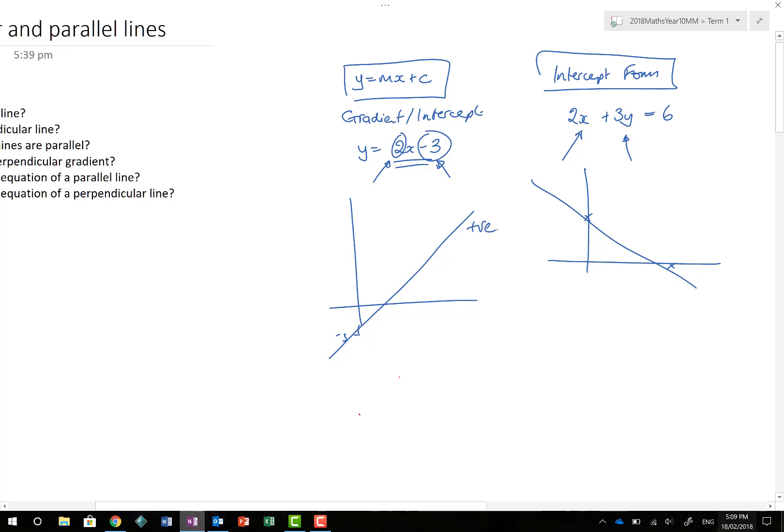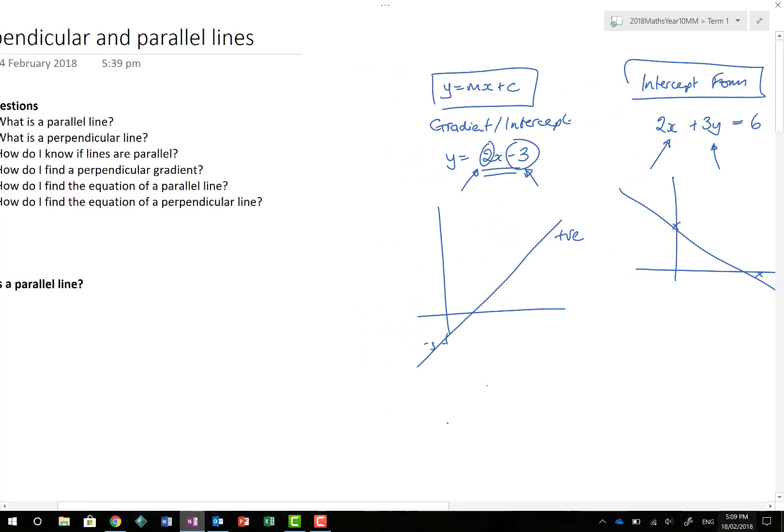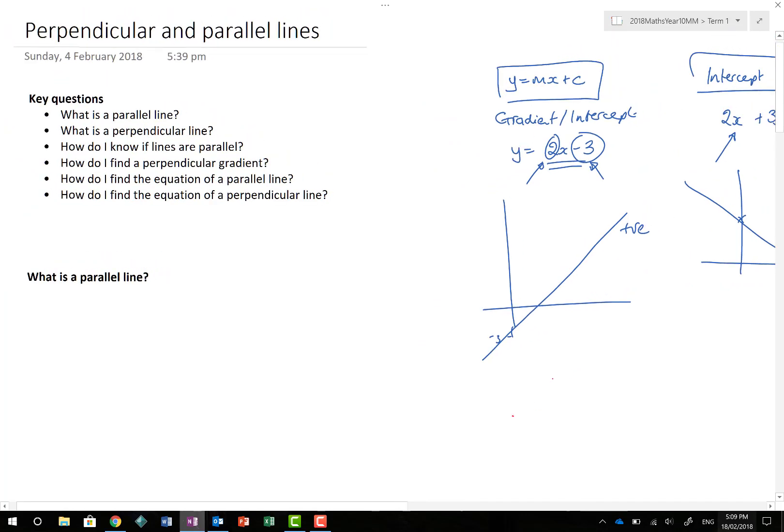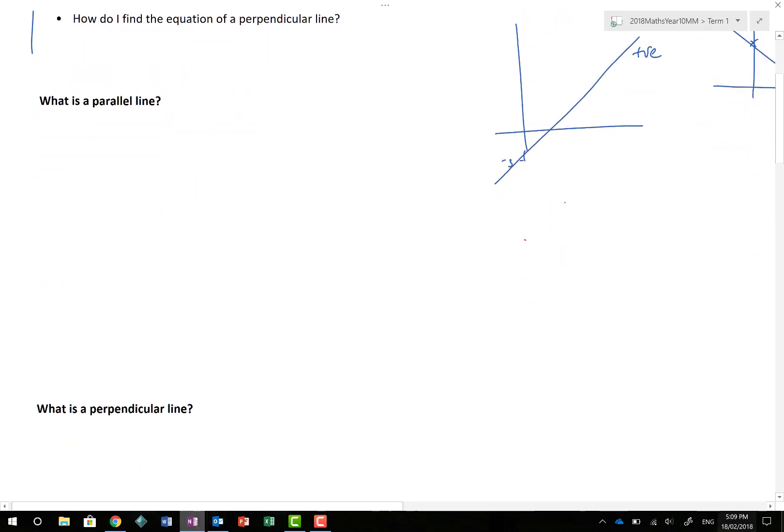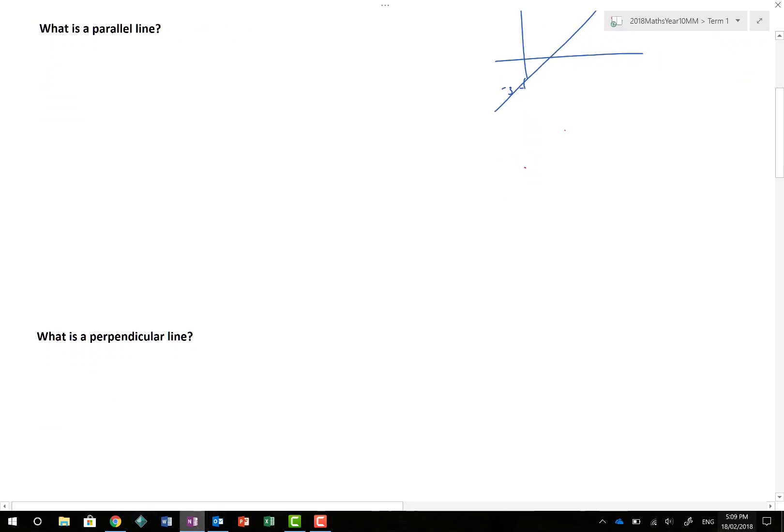It's not so much about that today. It's more about making sure we understand what is a parallel line, what is a perpendicular line, how do we know if they're parallel, and finding perpendicular gradients. A parallel line is one that has exactly the same gradient.